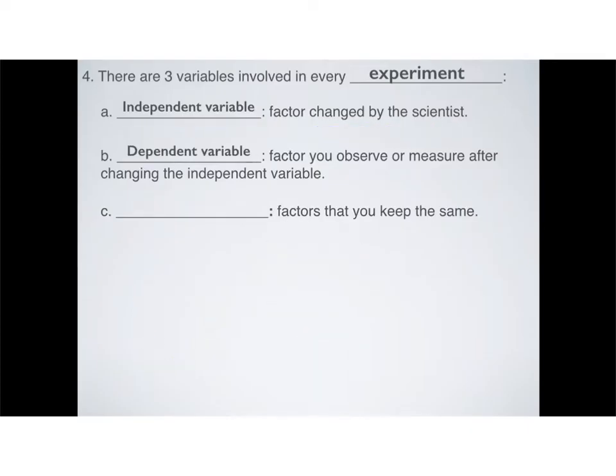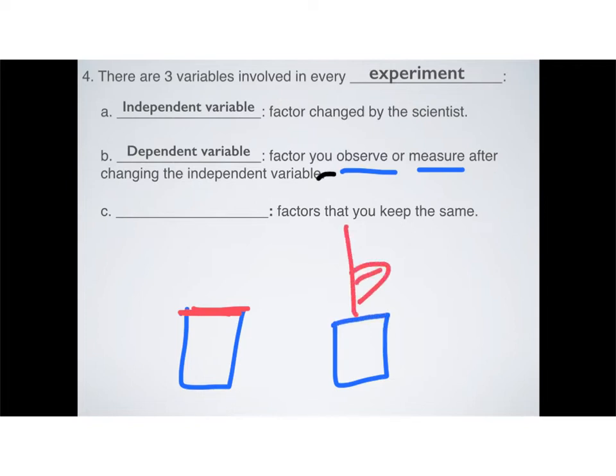The dependent variable, on the other hand, is something that you observe or measure after changing the independent variable. In the case of Francesco Redi, it was how many flies or maggots actually were coming out of the meat. In the case of using our plant example, it would be how much actually did this plant grow in red light, or in blue light, or in green light, or in white light. The dependent variable is something that you measure.